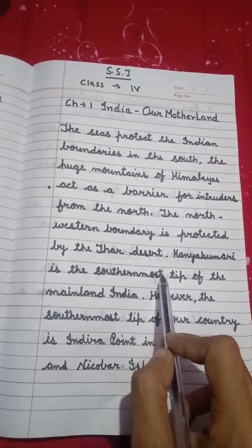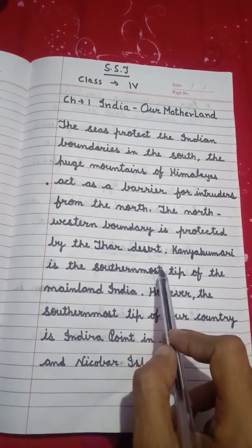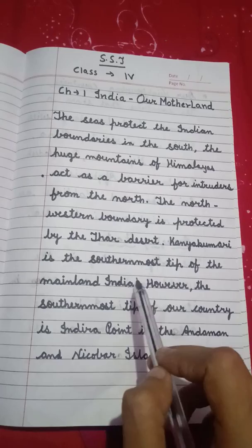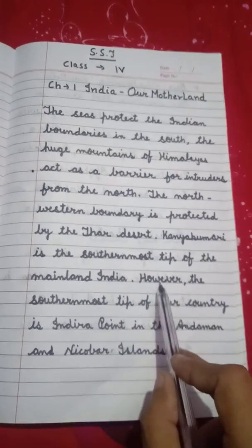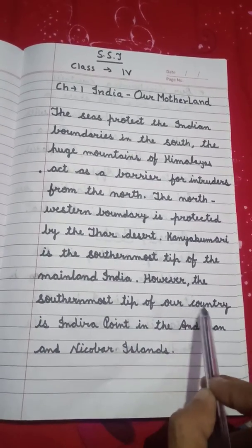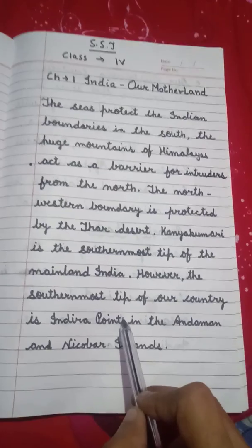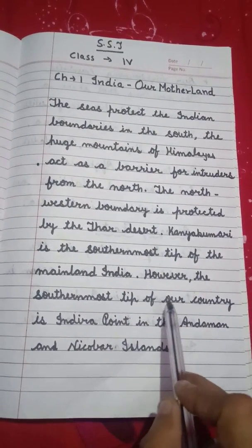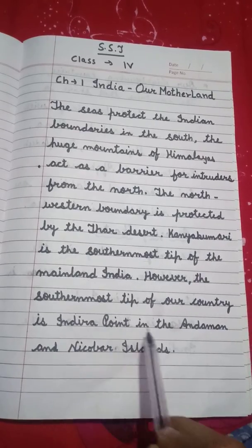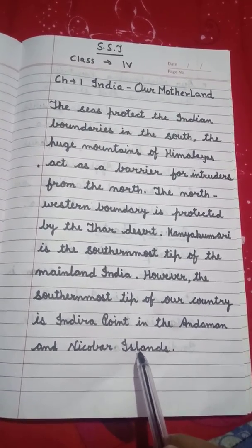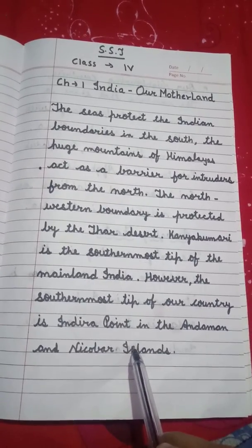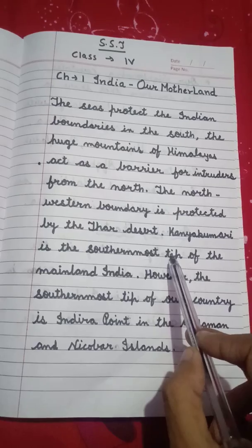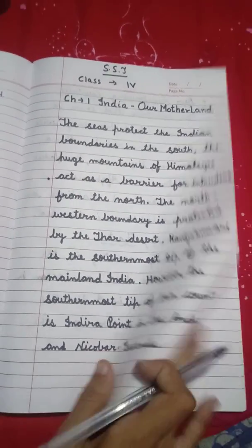अगर हम states के according देखते हैं तो जो Kanya Kumari है वो South पे बिल्कुल corner पर उपस्थित है। However, the southernmost tip of our country is Indra Point। हमारे country की जो southern — दक्षिणी छोर है, वो Indra Point है, जो Andaman और Nicobar Islands में है। अगर हम states के according देखें तो वो Kanya Kumari है।